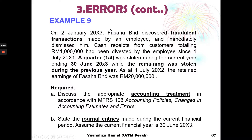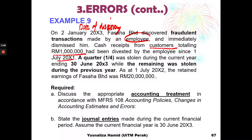Now let's look at example 9, our last example. On 2nd January 20X3, Fasaha discovered fraudulent transactions made by an employee, who was immediately dismissed. The employee had divested cash received from customers — totalling 1 million — since 1st July 20X1. One quarter was stolen during the current year ending 30th June 20X3, while the remaining three quarters were stolen during the previous year.